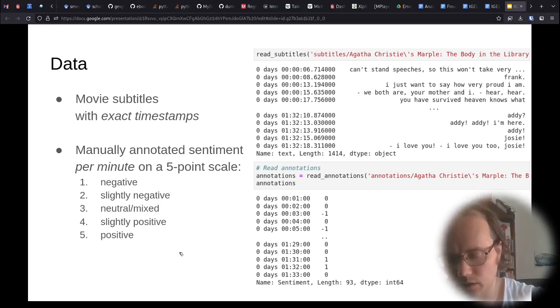The annotations are based on annotating the sentiment per minute on a five-point scale. By sentiment here, we do not mean whether the person watching the movie enjoys the movie or not. But similar to what Kurt Vonnegut meant by his good or ill fortune axis, it describes what is happening in the story, if things are going well or not. I use a five-point scale so as to have a sufficient amount of detail to be able to distinguish negative and slightly negative events in the movie.